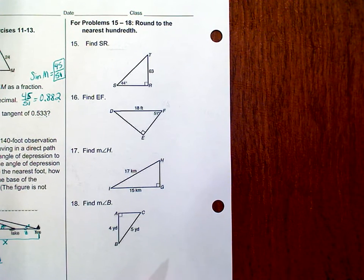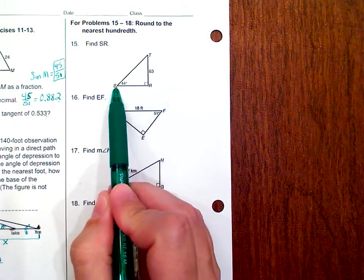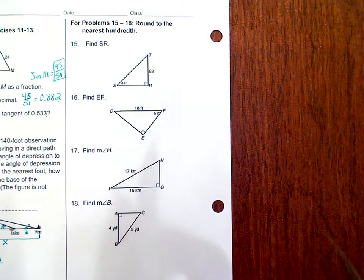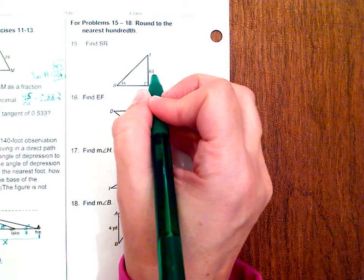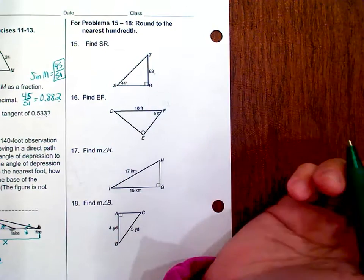For problems 15 through 18, round your answer to the nearest hundredth. For number 15, it's asking for the side length SR. SR is going to be adjacent to your angle and 63 is opposite, so that's going to be the tangent.